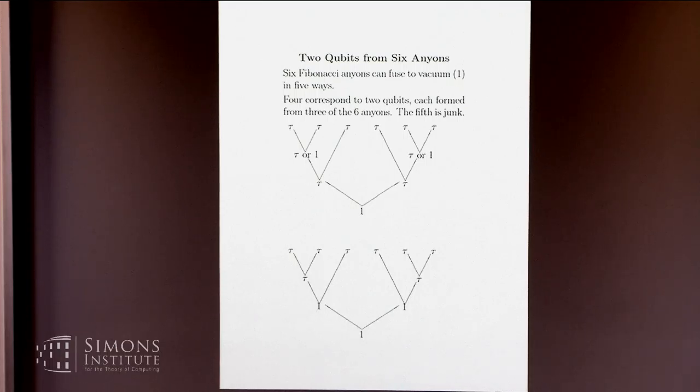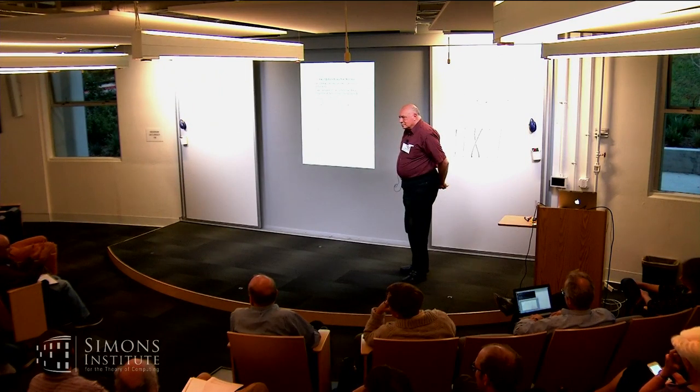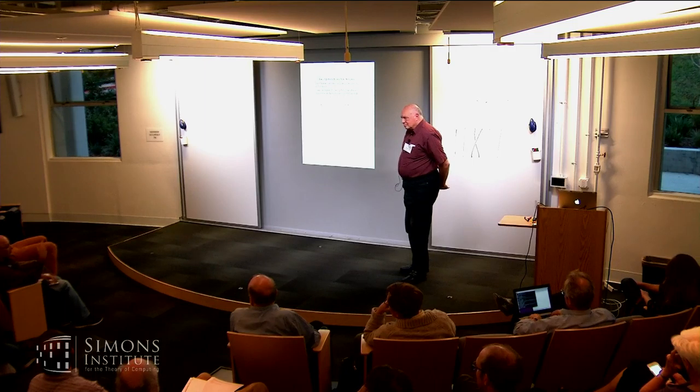So one question called the leakage problem, because you don't want to leak into this subspace, is are there elements of the braid group which map this four-dimensional subspace into itself, and are not trivial in the sense that I just described. And this has apparently been an open problem for quite a while, and I guess the main result of our work is that it motivates lots of interesting stuff, but we still, we're beginning to see why it's been an open problem for a while.